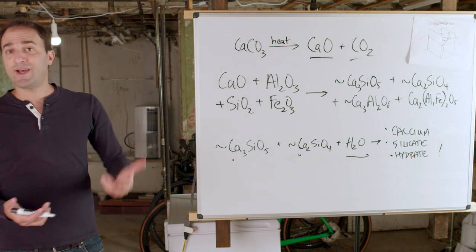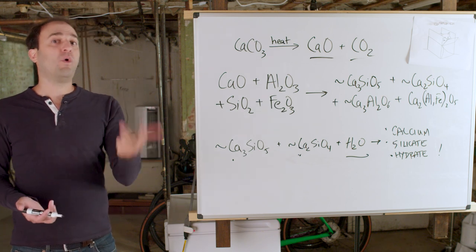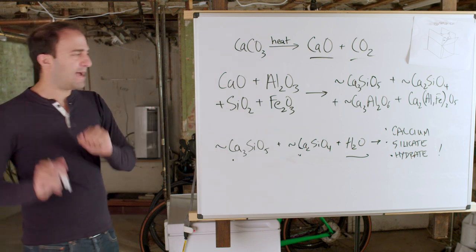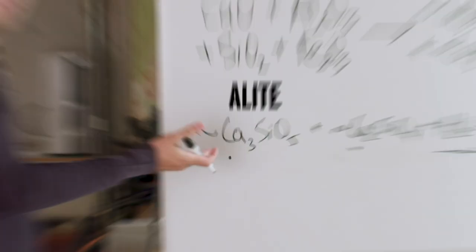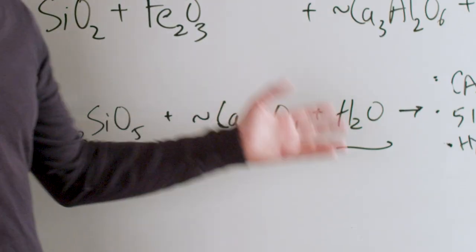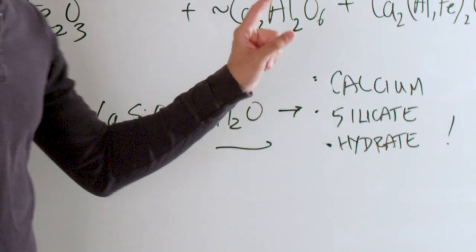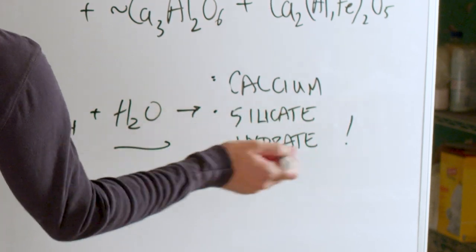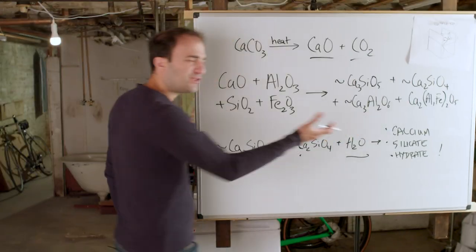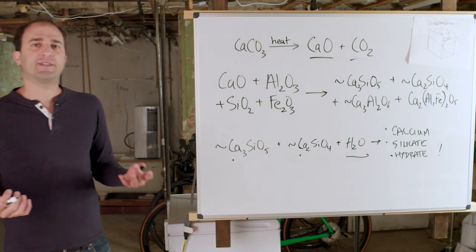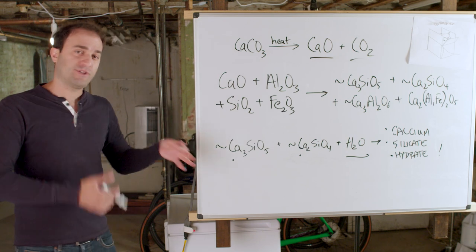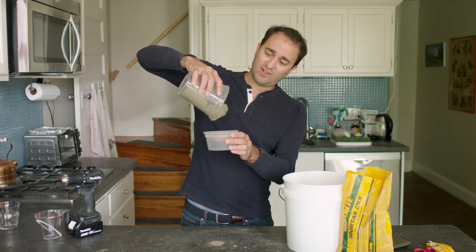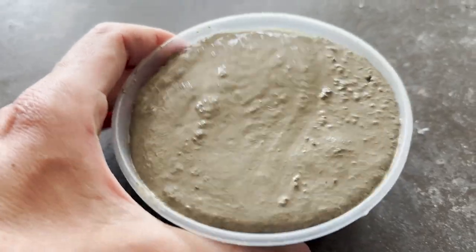Then you take the cement and you add some sand, pebbles, and water. The next thing that happens is that two of the chemicals from over here, which are called A-Lite and B-Lite, react with the water to form calcium silicate hydrate, which is essentially the glue that holds everything together. It is this reaction that turns this wet and goopy stuff into hard concrete.